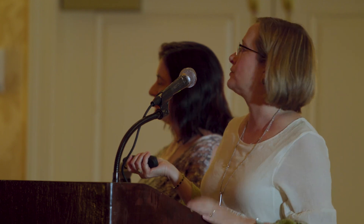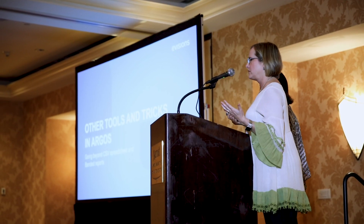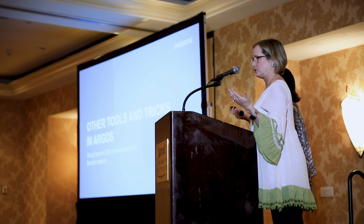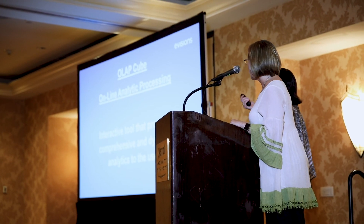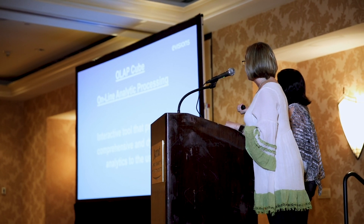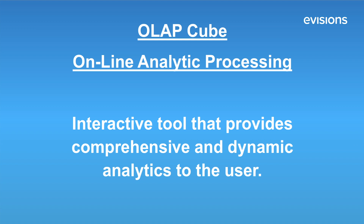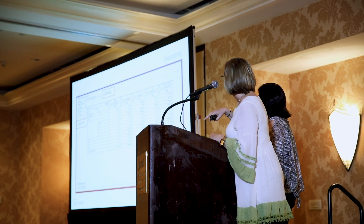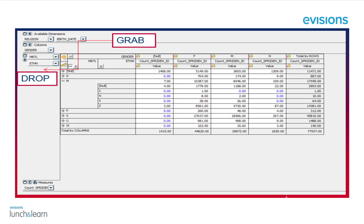We have other tools and tricks we've been using in Argos — it really is versatile. It's so much more than just a spreadsheet or a banded report. One thing is the OLAP cube, which provides dynamic reporting and gives users the ability to look at data in whatever way they want, with variables at the top and on the side. They can click and drag to dice and splice the information in the way they need to see it, which is very helpful.